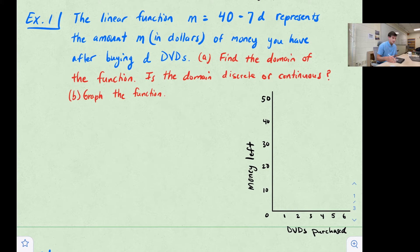So the domain, remember domain is our input value, which is our independent variable, which is going to be the variable that is not solved for. So in this case, this equation is solved for M, so M would be our output value or our dependent variable. So when we're talking about domain, we want to think or we want to focus on D, the variable D.